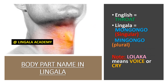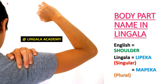Throat is Mongongo — that's singular. The plural is Mingongo. Note that Lolaka means voice or cry. Shoulder is Lipeka — that's singular. The plural is Mapeka.